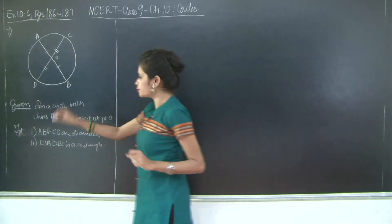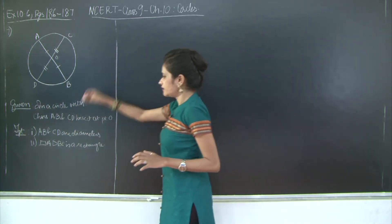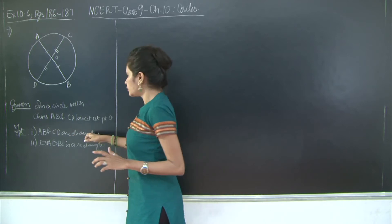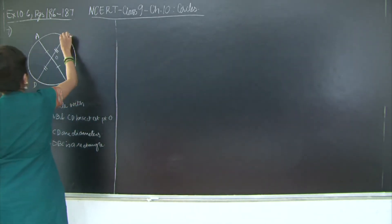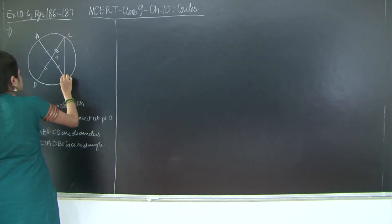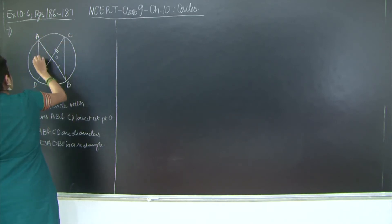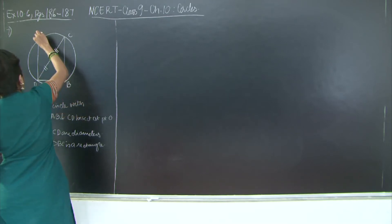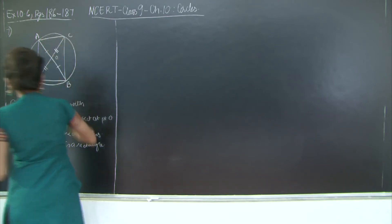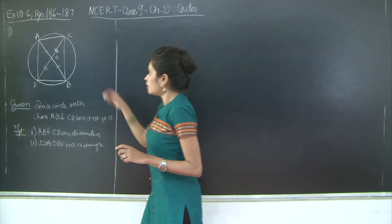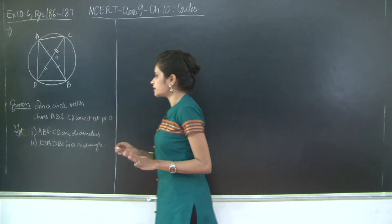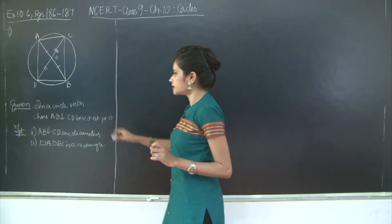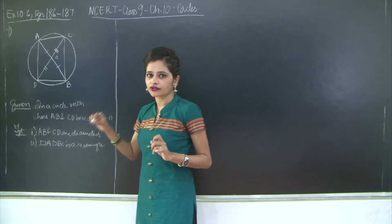In order to prove this as a rectangle and even to prove the first section, we will be needing a construction. So I am joining points A to D, B to C, D to B, and A to C. Now A, C, B, D — all these points are lying on the circumference of the circle, because they are the chords of the circle.